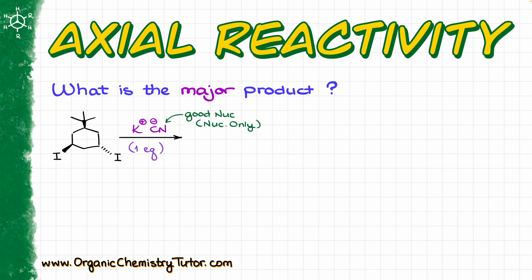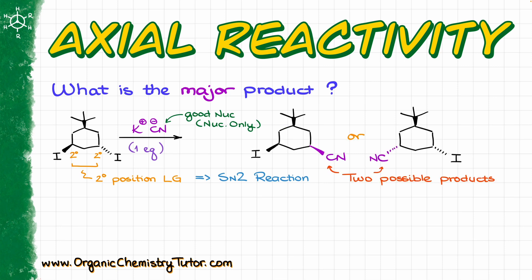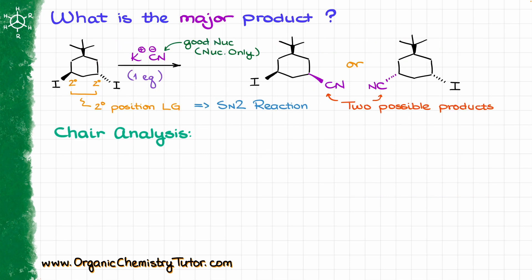We have potassium cyanide, which is a good nucleophile. On top of that, we're seeing the six-membered ring with two leaving groups. Both leaving groups are in the secondary position, which means that we are looking at an SN2 reaction. That means we have two possible products. But which of these two products is going to be our major product? Since we are working with a six-membered ring, we probably need to search for our answer in the chair conformations. So let's do the chair analysis.